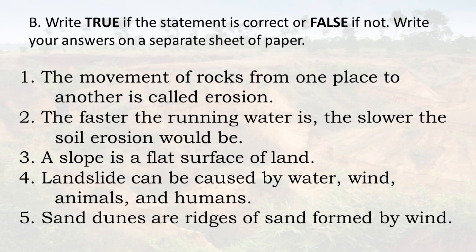3. A slope is a flat surface of land. 4. Landslide can be caused by water, wind, animals, and humans. 5. Sand dunes are ridges of sand formed by wind.